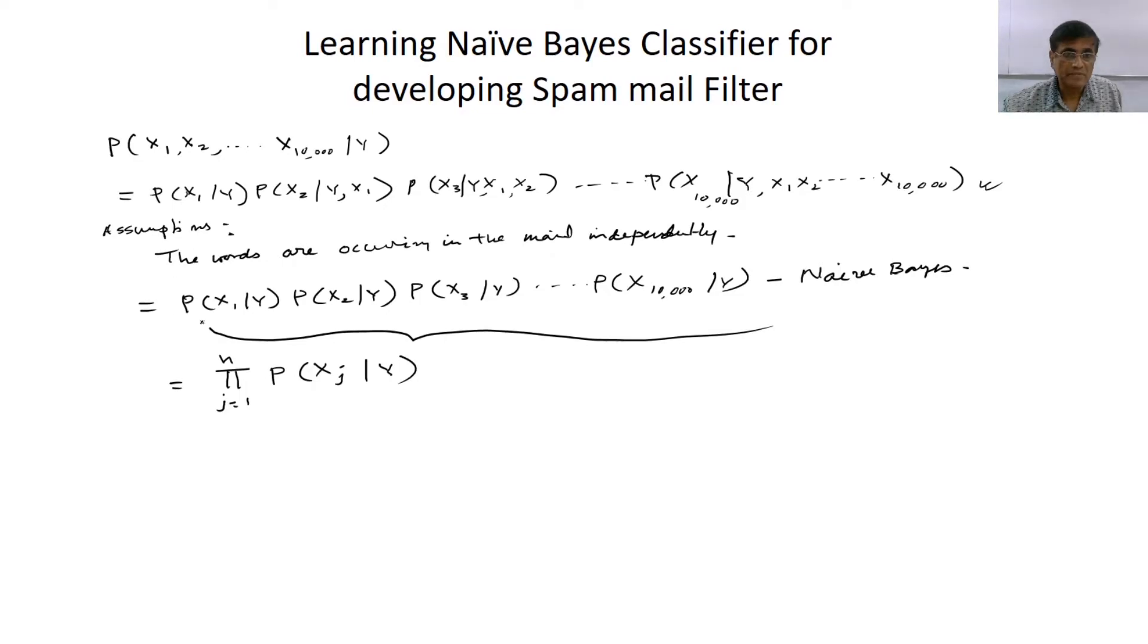The moment I make that assumption which may not tally with the ground truth, then I can write down. So this assumption, after this assumption, the formula is known as Naive Bayes formula, because now it is computable: probability given a class, feature vector X1 belongs times probability X2, all kinds of things now are computable. And then it can be computed by this formula.